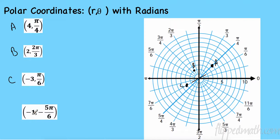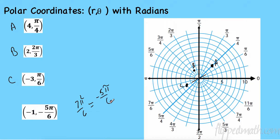Now point D: negative 1 and negative 5 pi over 6. Instead of going counterclockwise, I go negative — so negative 5 pi over 6 is the same as 7 pi over 6, since they're the same angle in opposite direction. Go to 7 pi over 6, but since the radius is negative 1, go the opposite way — so the point ends up right there.